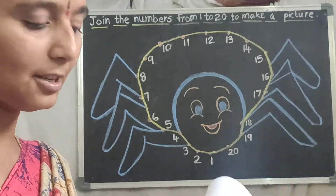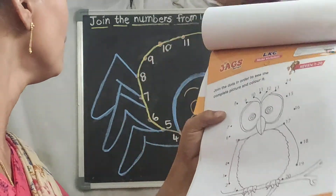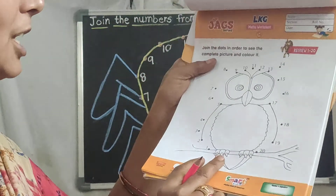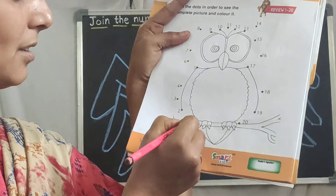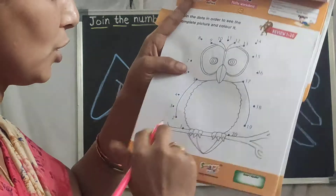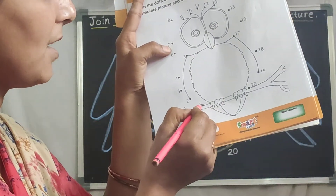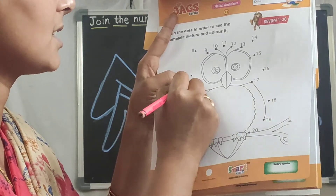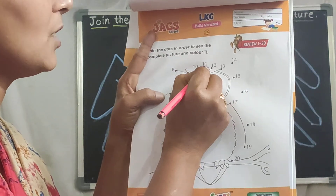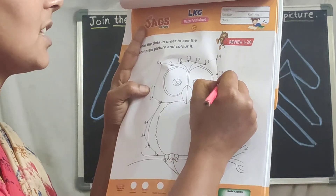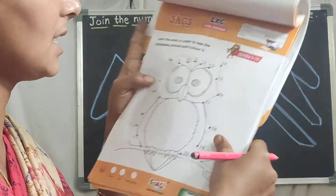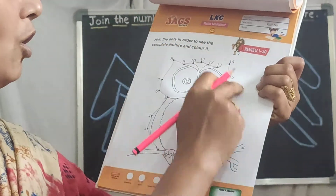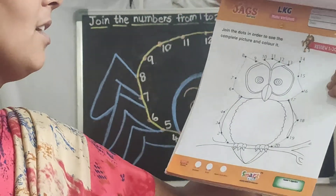After that, turn the page again. We just did join-the-dots inside — now here you can see the same pattern again. You should join the dots here. Start from dot 1, then 2, 3, 4, 5, 6, 7, 8, 9, 10, 11, 12, 13, 14, 15, 16, 17, 18, 19, 20. So join all the dots up to twenty — what is the picture? All of you find out.